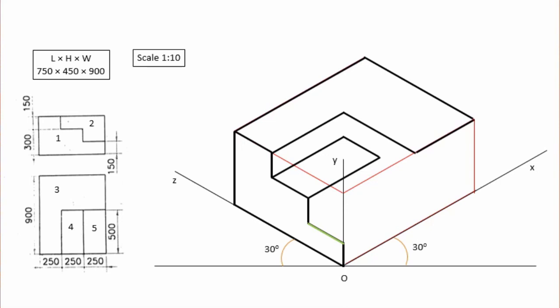If you look at the same dimension, it will be parallel. The 3rd rectangle is 50 mm. The right side is 25 mm. The right side is 50 mm. The rectangle is complete. The right side is the rectangle.